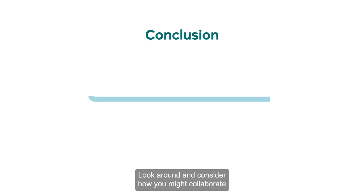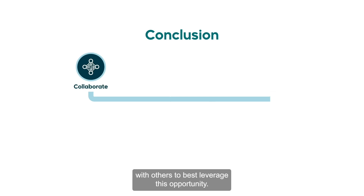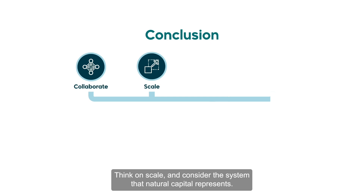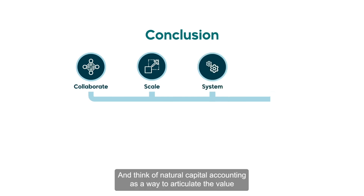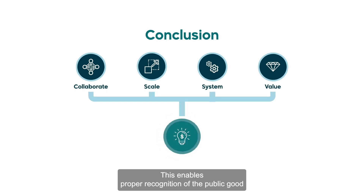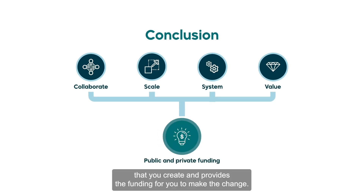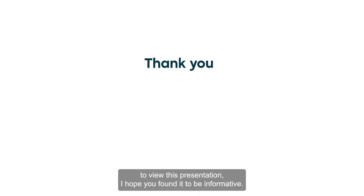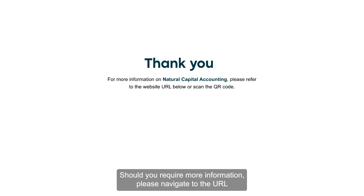So in conclusion, look around and consider how you might collaborate with others to best leverage this opportunity. Think on scale and consider the system that natural capital represents. Think of natural capital accounting as a way to articulate the value that you provide. This enables proper recognition of the public good that you create and provides the funding for you to make the change. Thanks for taking the time to view this presentation — I hope you found it to be informative. Should you require more information, please navigate to the URL in the bottom left corner of the page or scan the QR code.